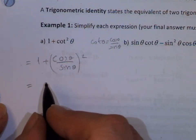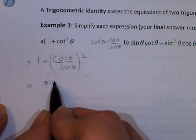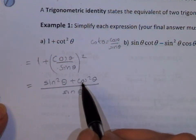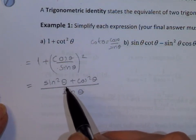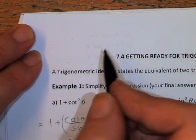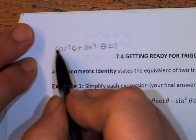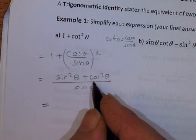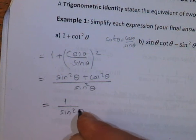Then we can find a common denominator. Multiply by sine squared theta over sine squared theta, so you get sine squared theta plus cosine squared theta, all over sine squared theta. The most famous identity is sine squared theta plus cosine squared theta equals 1. So we replace sine squared theta plus cosine squared theta by 1, and you get 1 over sine squared theta.